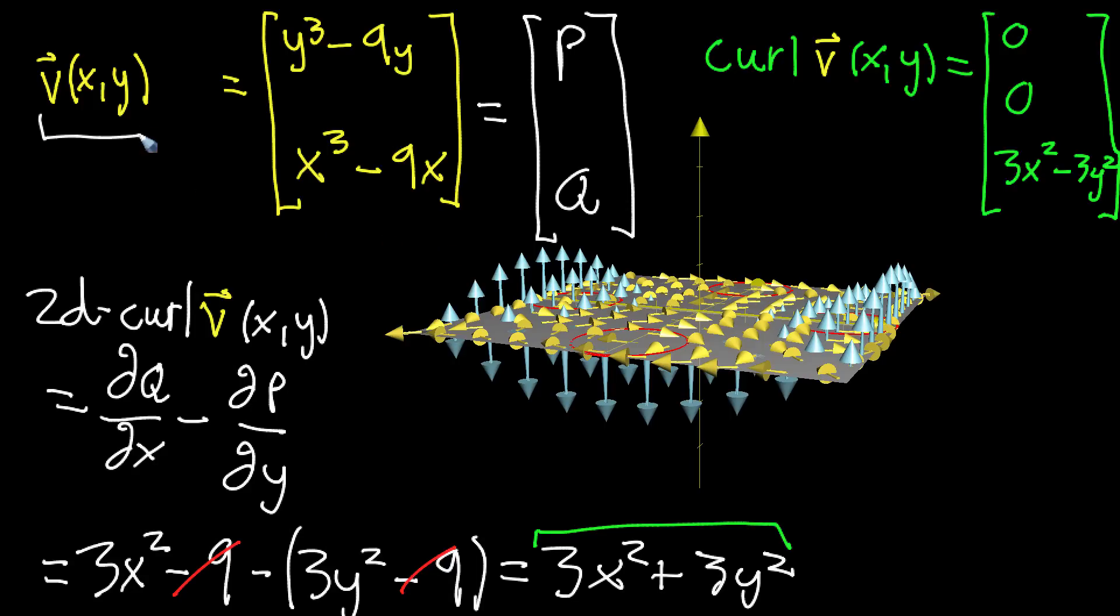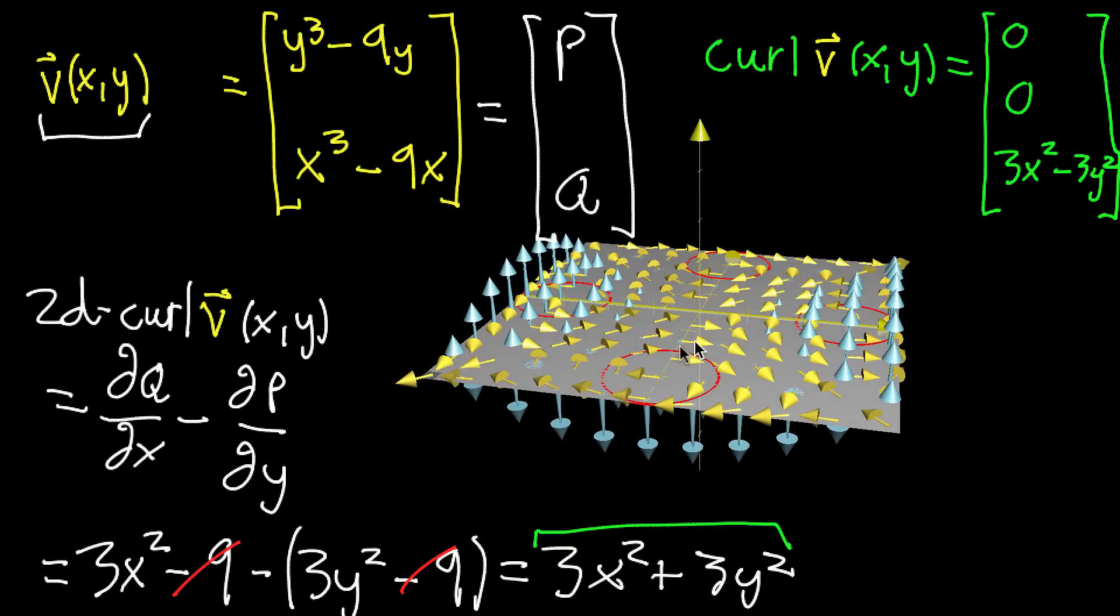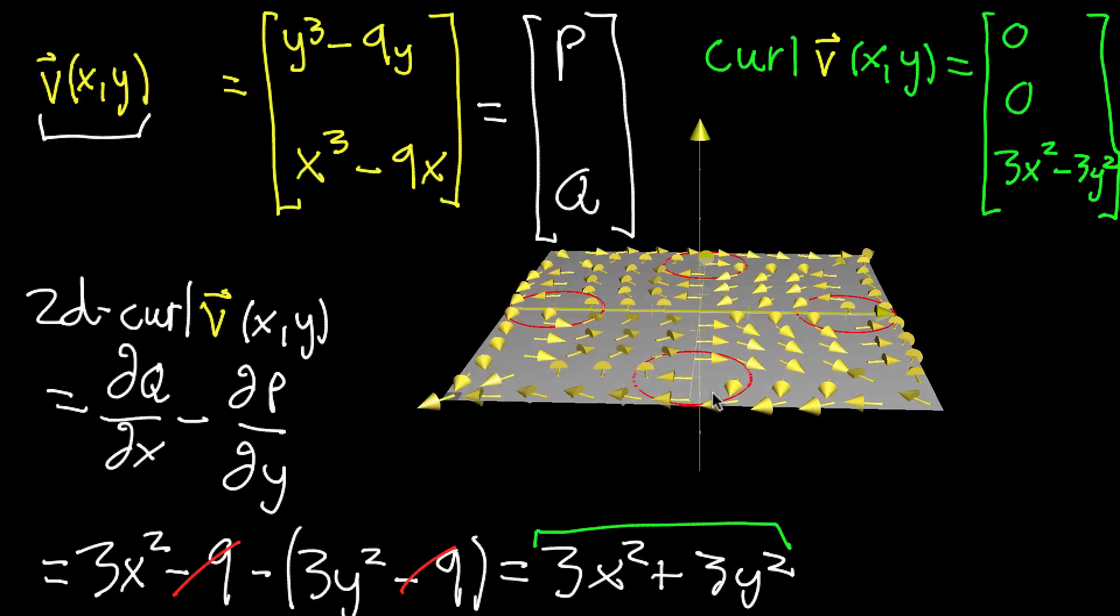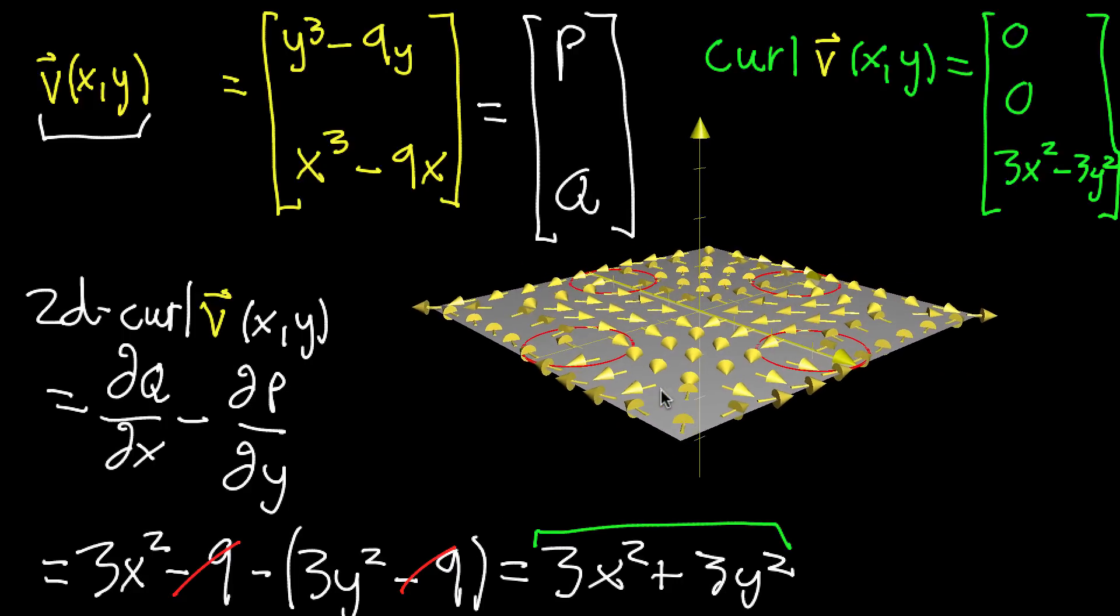So where we left off, we had this two-dimensional vector field V, and I have it pictured here as a yellow vector field. I just stuck it in three dimensions in kind of an awkward way where I put it on the xy plane and said, pretend this is in three dimensions.